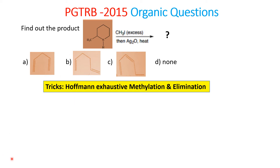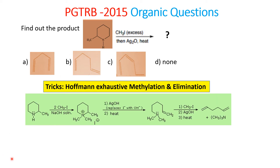First the methylation will take place and then elimination will take place. See the reaction mechanism: if you react with excess methyl iodide, this will react with the nitrogen to form N-dimethyl, and this will become a quaternary ammonium salt. This will cleave on heating with silver oxide — it will get cleaved and form a double bond on both sides.